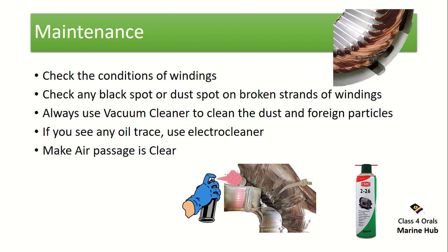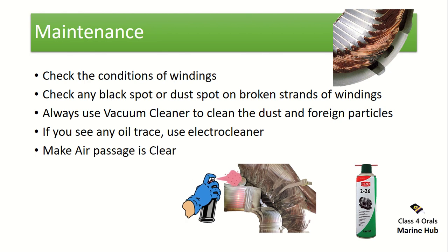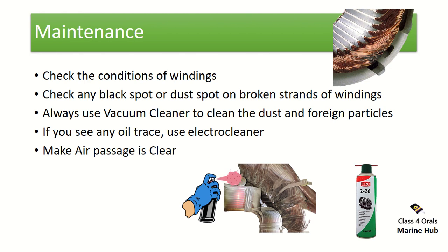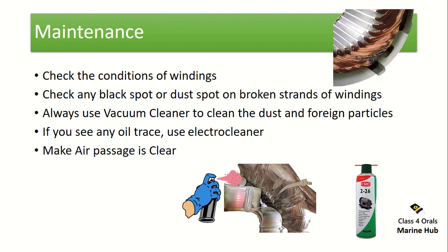Now for the maintenance: the first point is to check the condition of the windings. Check if there are any black spots, dust spots, or broken strands on the winding. If you find any, always prefer the vacuum cleaner to clean the dust and foreign particles, because the vacuum cleaner will absorb all the dust accumulated, whereas a blower will blow the dust all over. You can also use a lint-free cloth to clean the windings.